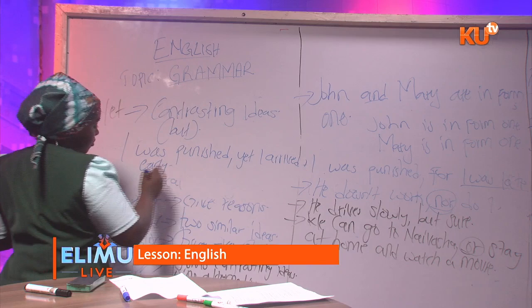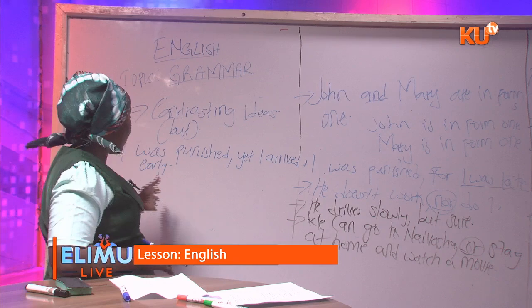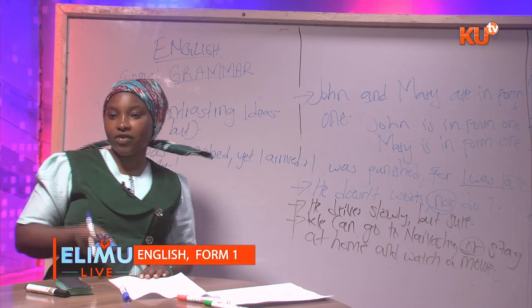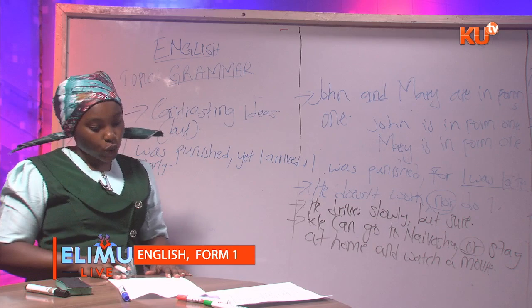For example, 'I was punished yet I arrived early for school.' Maybe this is a student telling us he or she arrived early in school but was punished. You can see it's a contrast — you don't expect someone who arrived early in school to be punished. That's why 'yet' brings out contrasting ideas.